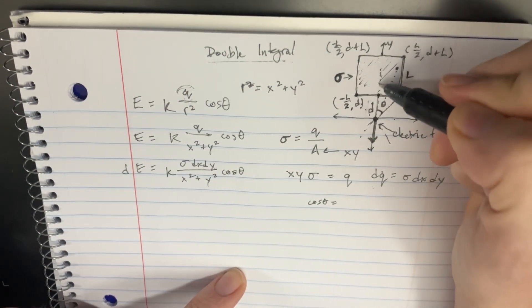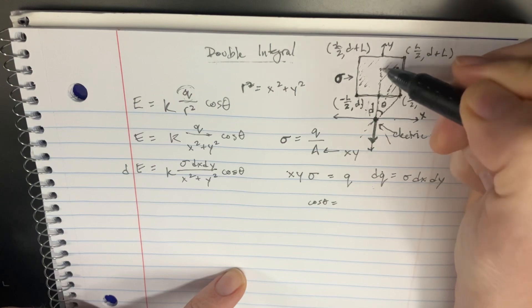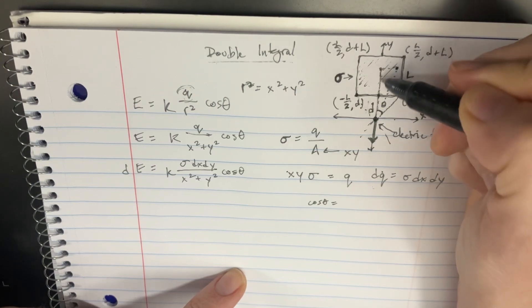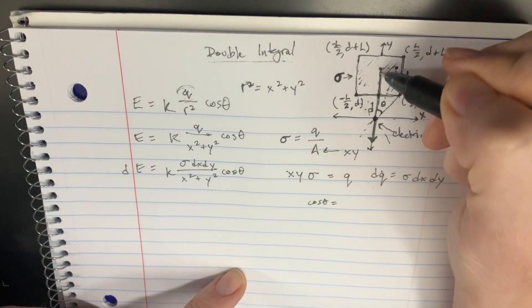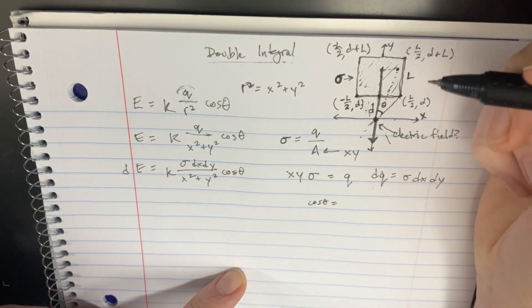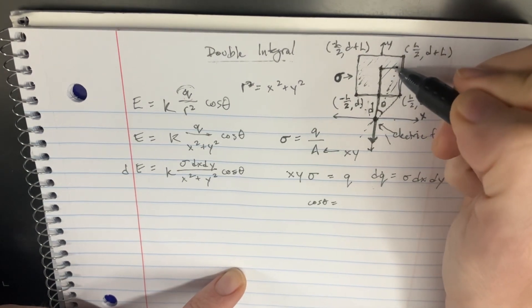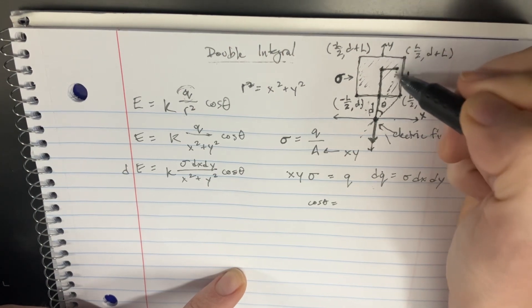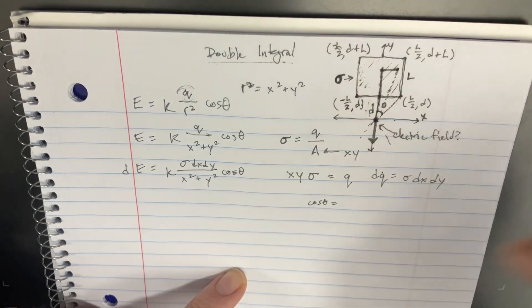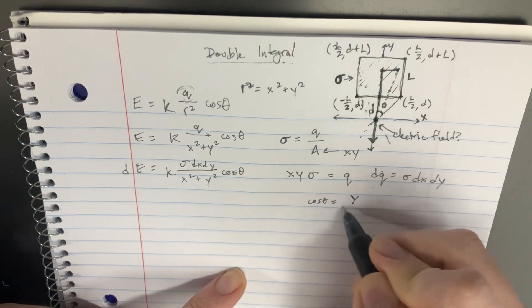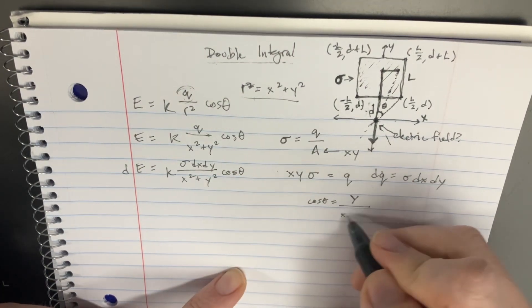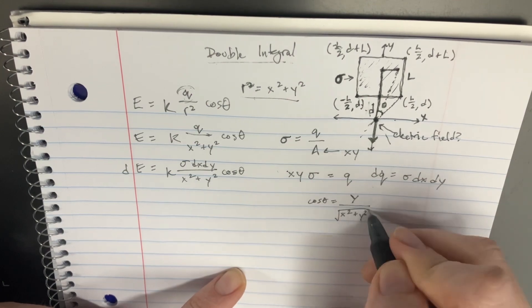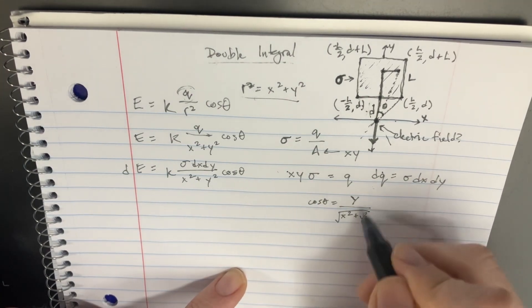But let's try to figure out what cosine theta is in terms of x's and y's. So cosine theta is going to be equal to whatever this length is, here to there, which would just be y. And then it would also just be over whatever we found for the distance there. So cosine would just be y over whatever we found for this, which is x squared plus y squared, but in the square root this time, because that's the hypotenuse.